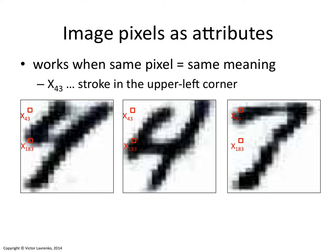The reason we can use pixels is because they have a natural meaning for digit recognition — because a part of the digit is expected to be in a certain part of the bitmap. If you flipped the 4 around, it wouldn't be a 4 anymore. Or if you turned it upside down, it wouldn't be a 4.